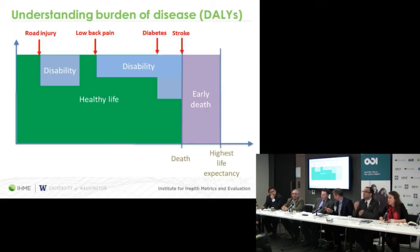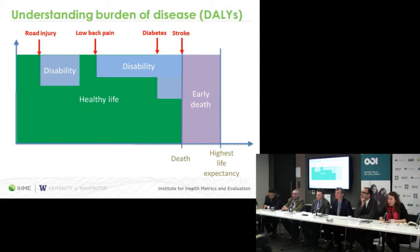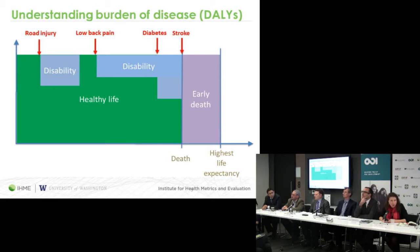This graph shows what we mean when we're talking about burden of disease or disability adjusted life years, also known as DALYs. Across the lifespan, let's say a person early in life experiences a road injury. They don't die but they experience a substantial disability that causes them great suffering. Later in life, middle age, they get lower back pain and diabetes, which also causes them to live a life in less than full health. Then they die early from a stroke, perhaps due to exposure to air pollution from vehicles, having not yet attained the maximum life expectancy we see in the world. So DALYs measure both years of life lost due to premature death and disability.